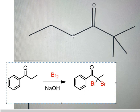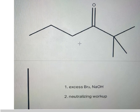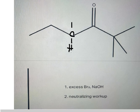So on the left of this one, we need to add two Brs here. We cannot put anything on the right because those positions are full — that's about carbon number four. This carbon has two hydrogens, and we need to replace both of them with Br.